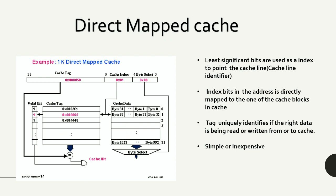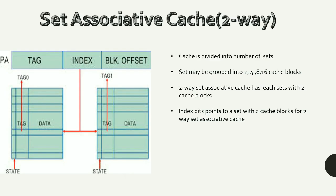The higher-order tag uniquely identifies whether the right data is being read or written from the cache. The valid bit signifies that the data is present inside the cache. It is called a direct map cache because using the index we are directly referencing one of the cache lines. Direct map caches are simple.